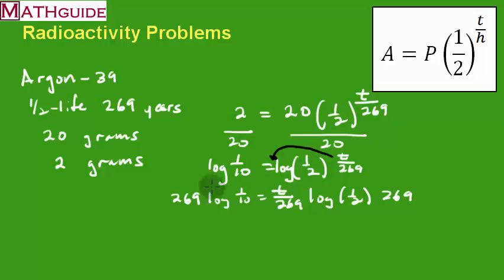That's good news because now the 269s have canceled on the right side. So I still have t and I'm multiplying it by the log of the half. So the opposite is to divide both sides by the log of the half. In doing so, I'm canceling this out and you'll notice that the only letter left on the left side of this equation is that letter t.